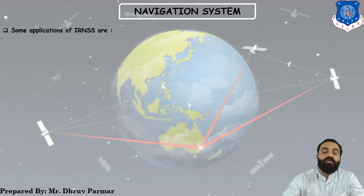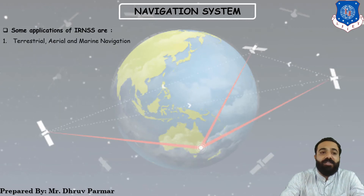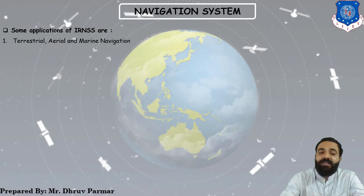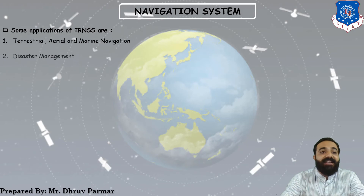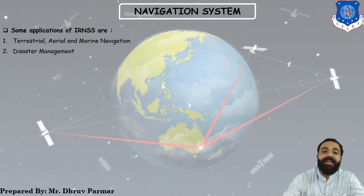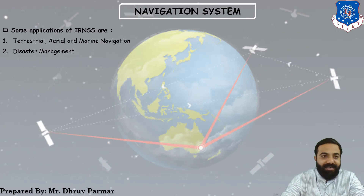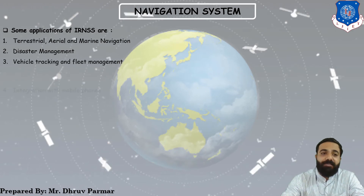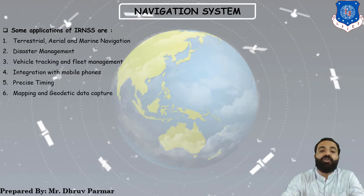There are several applications of IRNSS: terrestrial, aerial, and marine navigation can be easily obtained via this satellite. It also supports disaster management — we can predict disasters using the satellite. Other applications include vehicle tracking and fleet management, precise timing, mapping and geodetic data capture, terrestrial navigation for hikers and travelers, and visual/voice navigation for drivers.